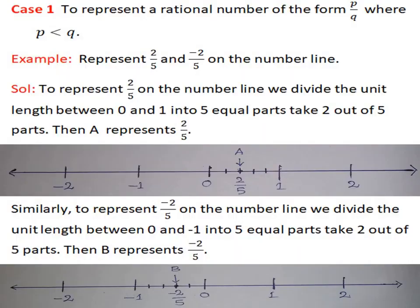Case one: to represent a rational number of the form P by Q, where P is less than Q. For example, represent 2 by 5 on the number line. Solution: to represent 2 by 5 on the number line, we divide the unit length between 0 and 1 into 5 equal parts. Take 2 out of 5 parts, then point A represents 2 by 5.